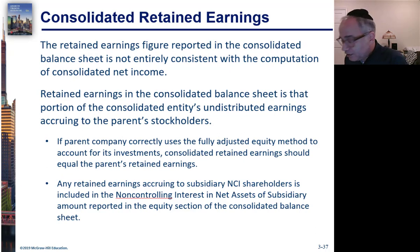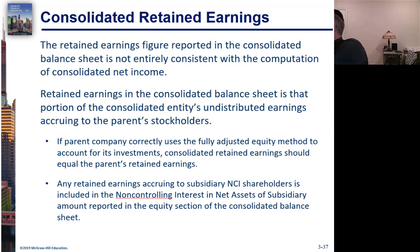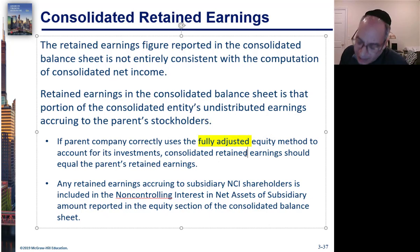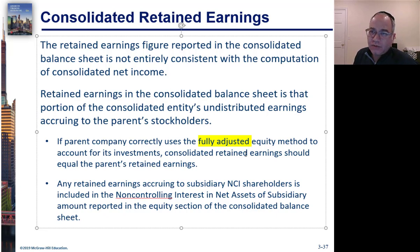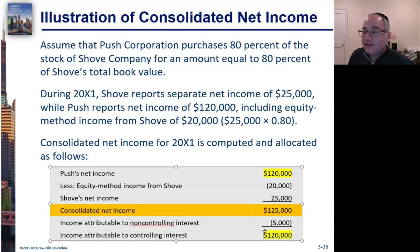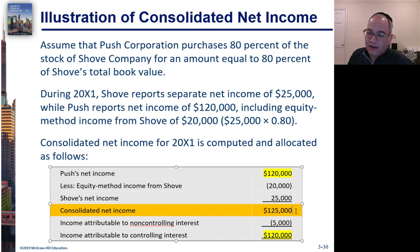As long as the parent is using the equity method — specifically the fully adjusted equity method, which is an important distinction we'll get to in later chapters — income on the books of the parent is going to equal the parent's share of net income: this $120,000, which equals income attributable to the controlling interest. If the parent didn't use the equity method and instead recorded income when dividends were received, they'd have to back out whatever they recorded to arrive at consolidated net income.